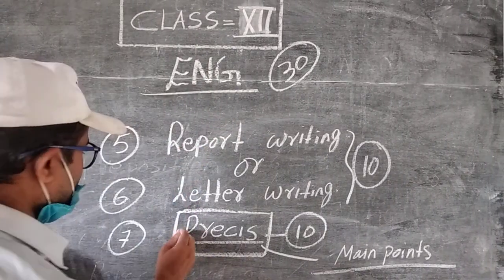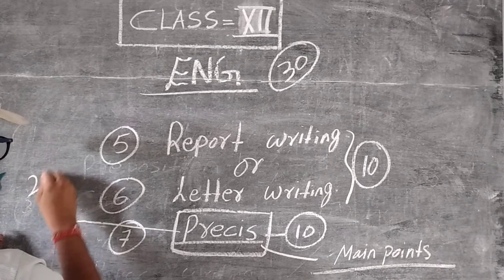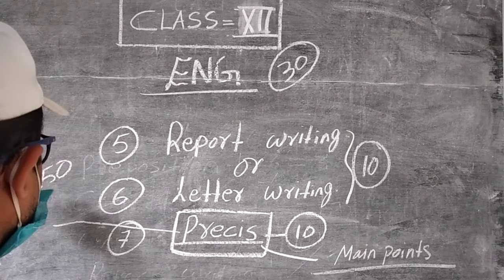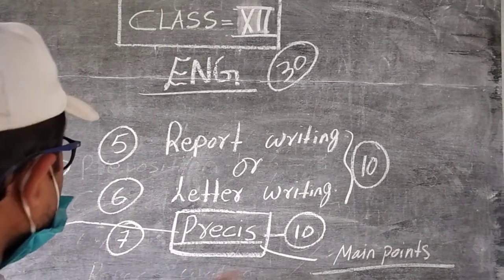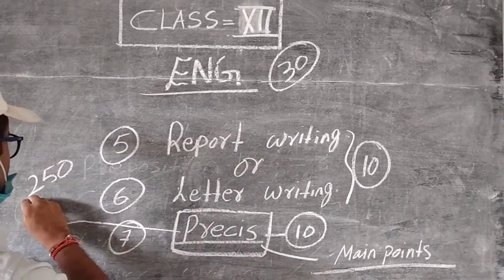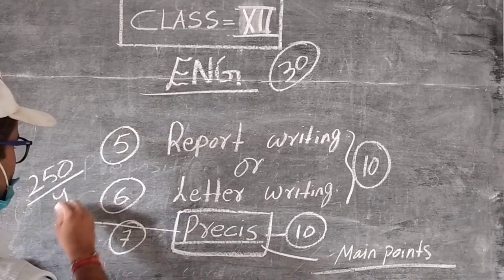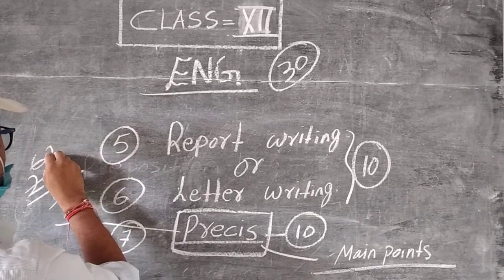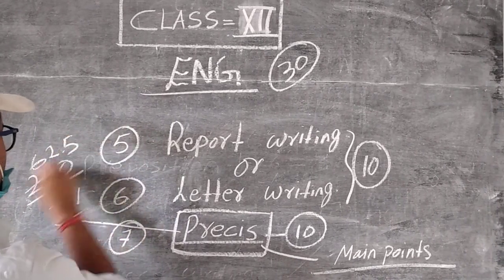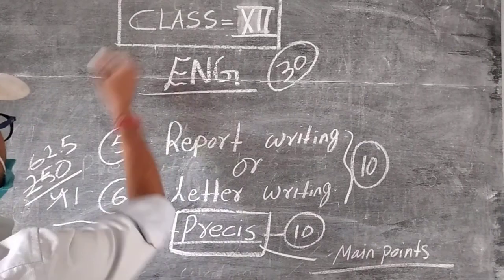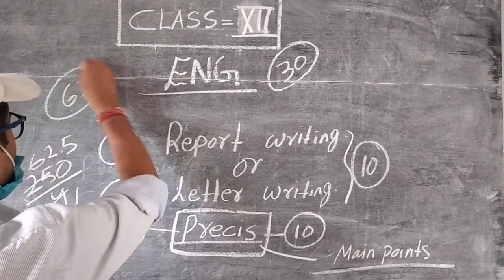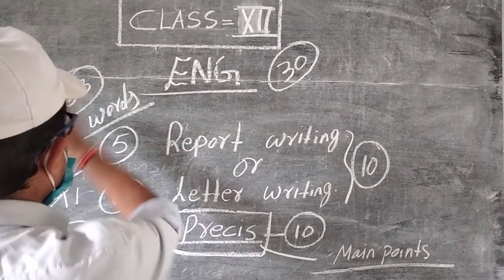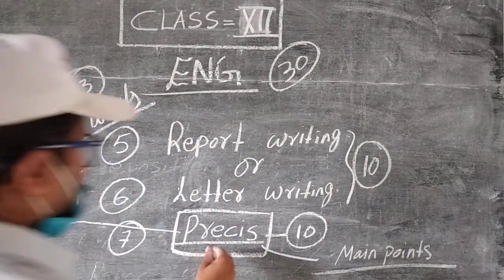Let's say the precise is of 250 words. Then your answer will be one-fourth. Let's divide it by four: 250 divided by 4 equals 62.5 words. It means your word will be 63 words - you have to write the main point in 63 words.